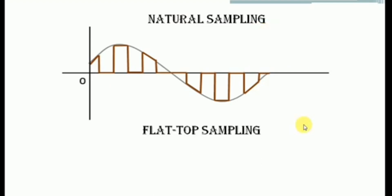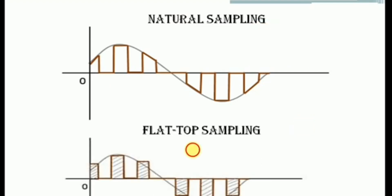In flat-top sampling, the pulses have a constant amplitude. Whenever this type of signal is passed through a channel, the noise effect will be less — the noise added to this signal is minimal, and at the receiver we can easily suppress or separate the noise and recover the message signal. This is the advantage of flat-top sampling over natural sampling.